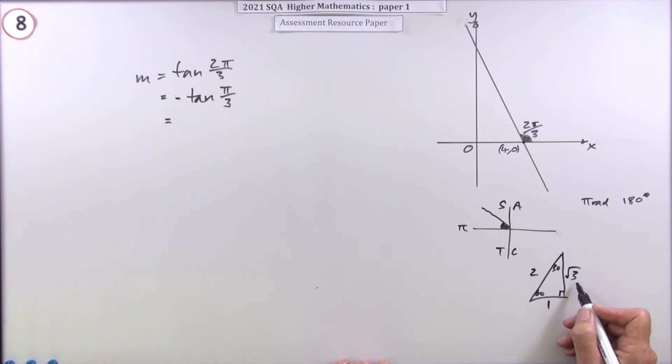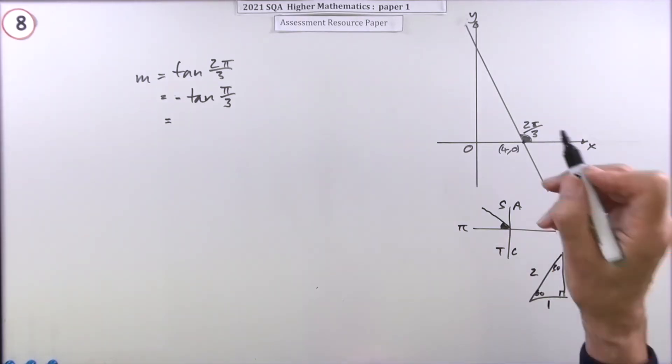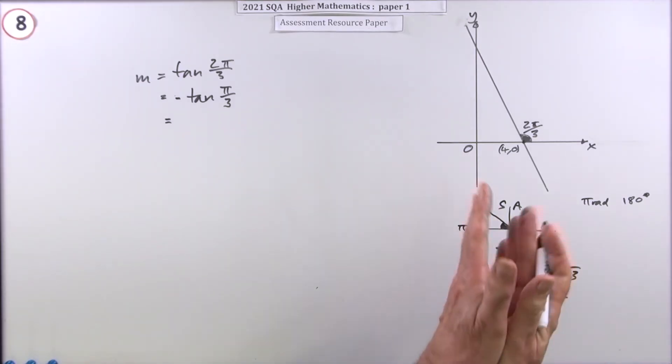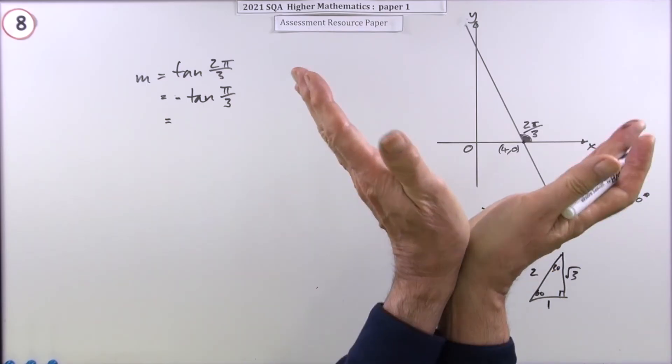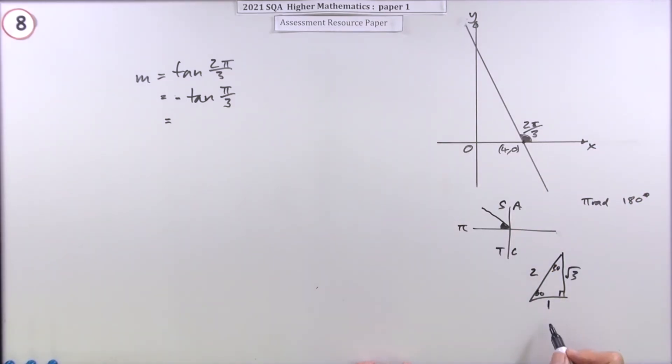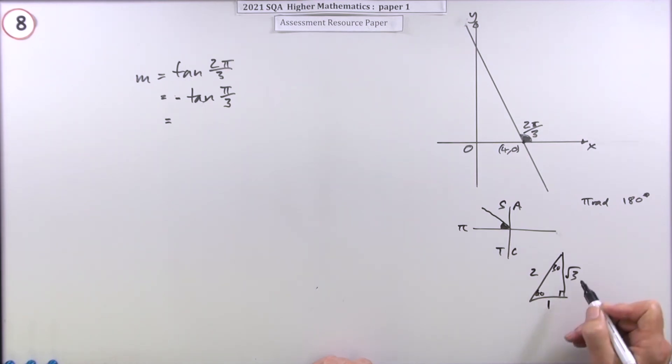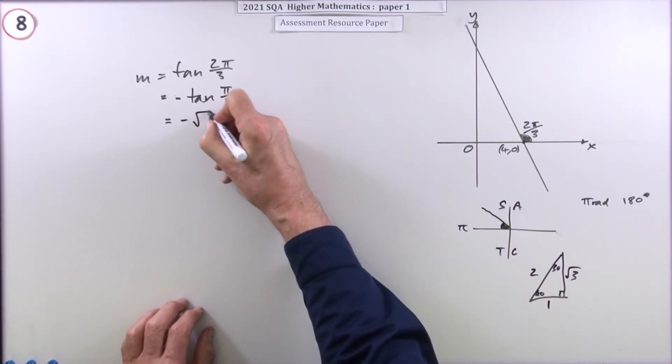And obviously two is bigger than root three because two is root four, so two must go there. One's the smallest, and the smallest one goes opposite the smallest angle. The sides open out according to how big the angles are. So what's the tangent of 60? It's the opposite over the adjacent: root three upon one. So that's just negative root three.